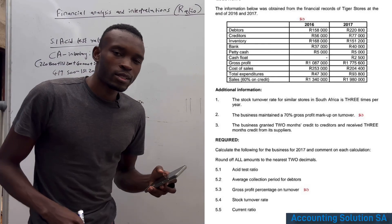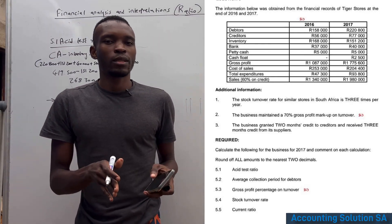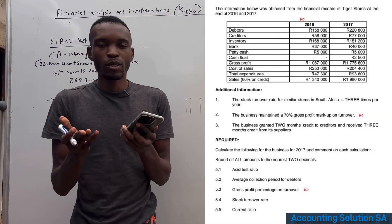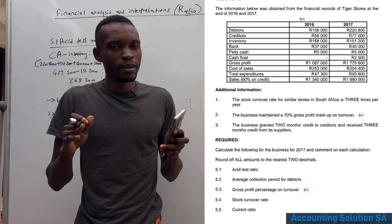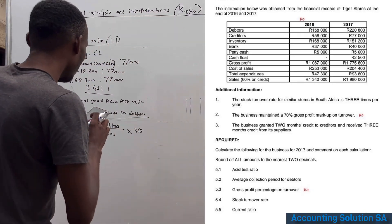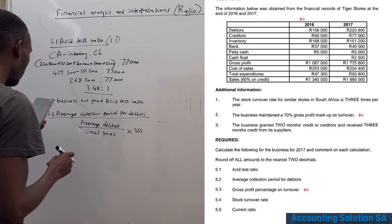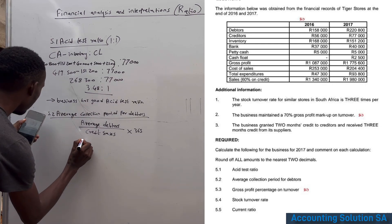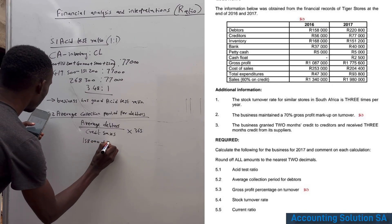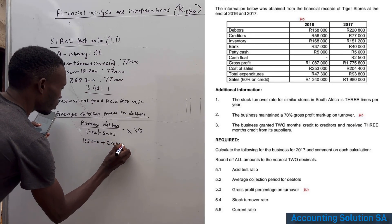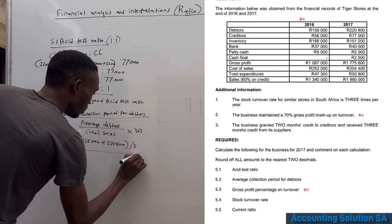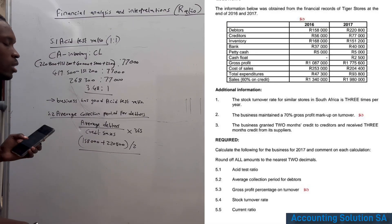Average debtors means adding last year's and this year's debtors and dividing by two. Last year's debtors were 158,000 and this year's are 220,800. Add them together and divide by two, then move on to credit sales.